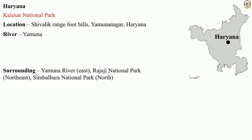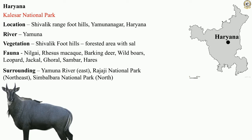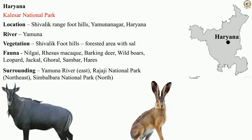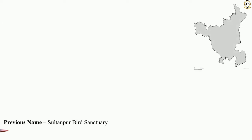The Yamuna River surrounds the national park. The park has vegetation of forested area with sal trees. One can find nilgai, rhesus macaque, barking deer, wild boar, leopard, jackal, goral, sambar, and hares in this Kalesa National Park.